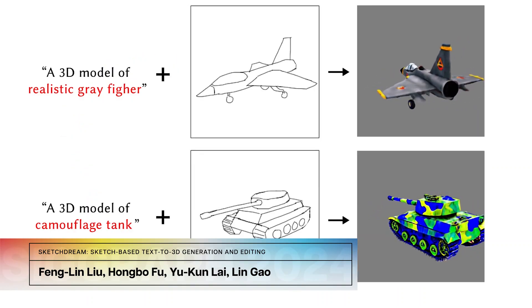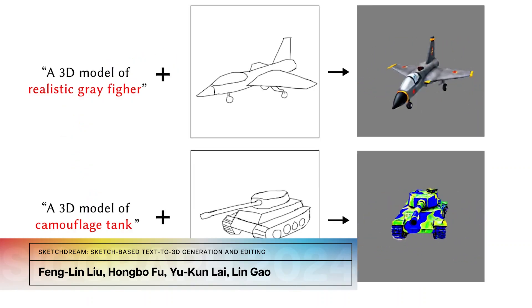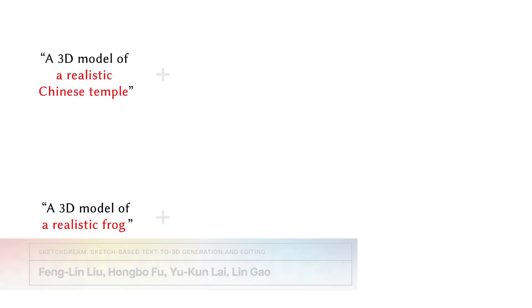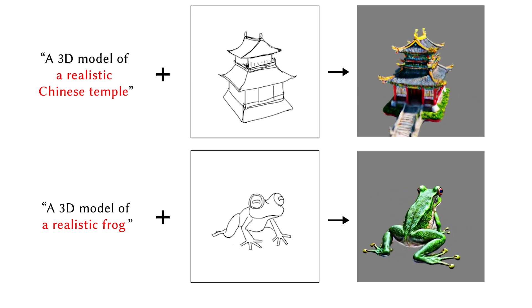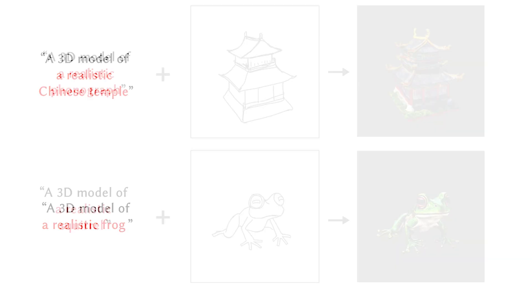This 3D NeRF generation method combines a text-based description with a simple sketch to generate photorealistic 3D results.